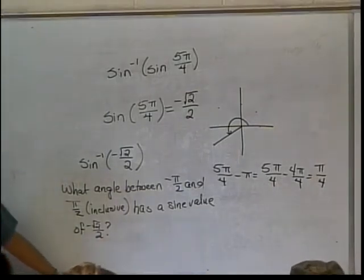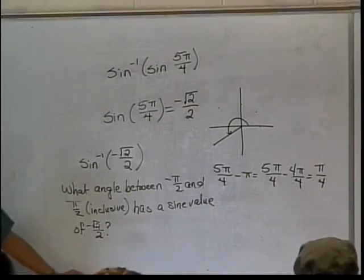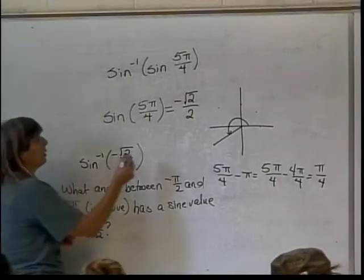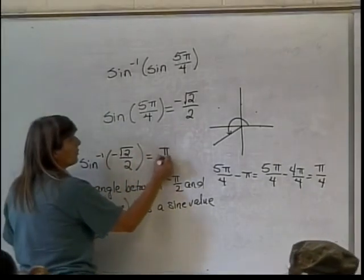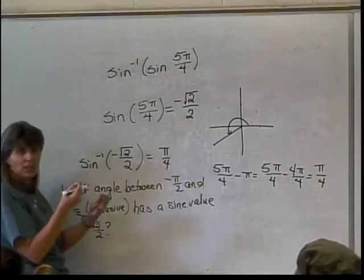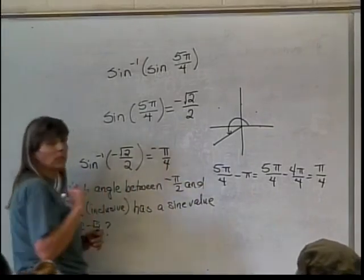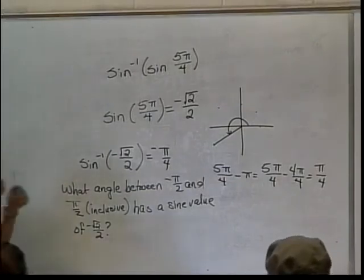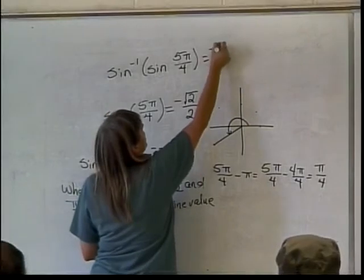So somewhere in quadrant 4, this is going to happen. Where down there, going in the negative direction, is it going to be? That's positive. Oh, yeah. Negative pi over 4. So pi over 4 is the one that we know is the basic one, but because we have to put that down in quadrant 4 going in the negative direction, it will be negative pi over 4. That's how far we have to go down there. So the answer to this is negative pi over 4.